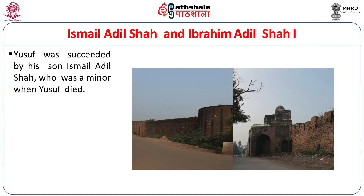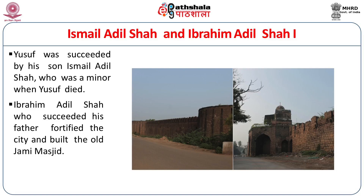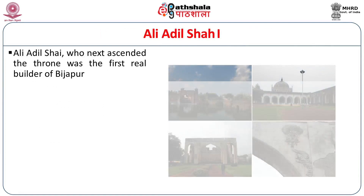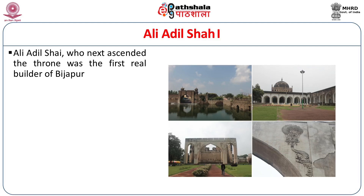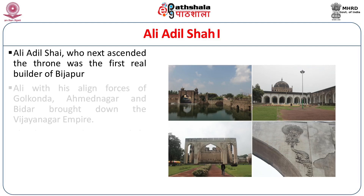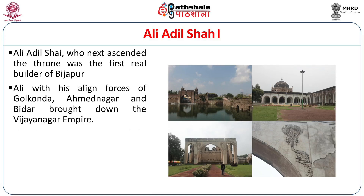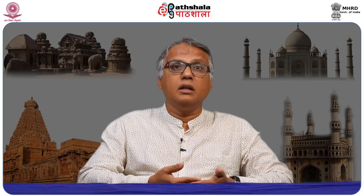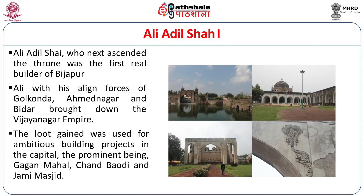Yusuf was succeeded by his son Ismail Adil Shah, who was a minor when Yusuf died. Ibrahim Adil Shah fortified the city and built the old Jami Masjid. Ali Adil Shah initiated a grand project — along with allied forces of Golconda, Nizam Shahi, and Baris Shahi of Bidar, they fought against Rama Raya of the Vijayanagar dynasty and defeated him. The loot gained was used to build a large city at Bijapur, including Gagan Mahal, Chand Baudi, and Chand Masjid.